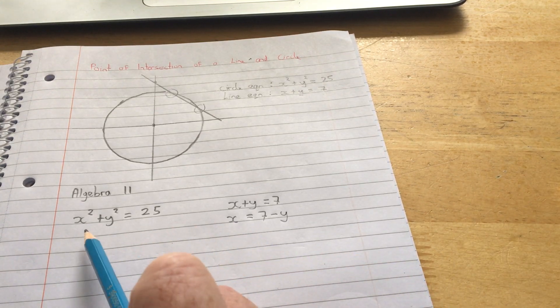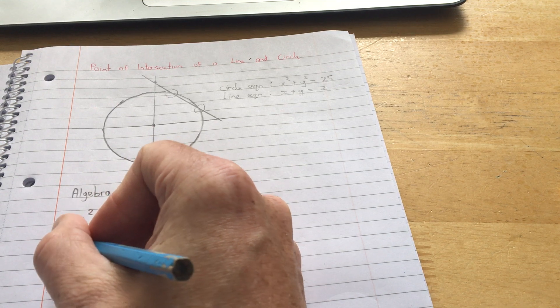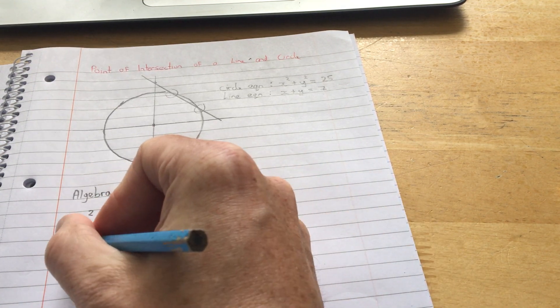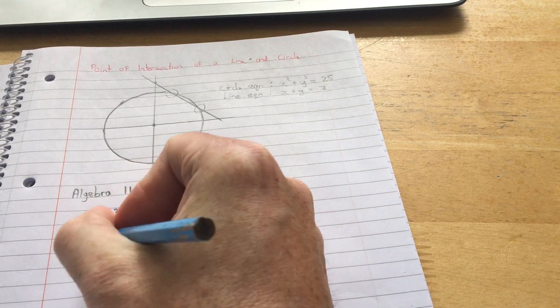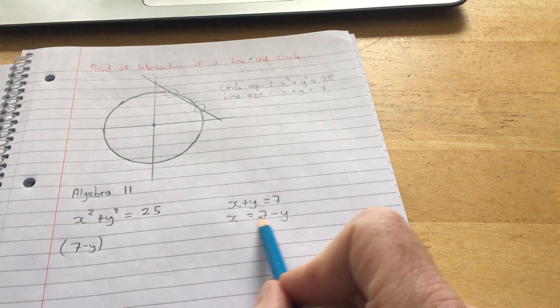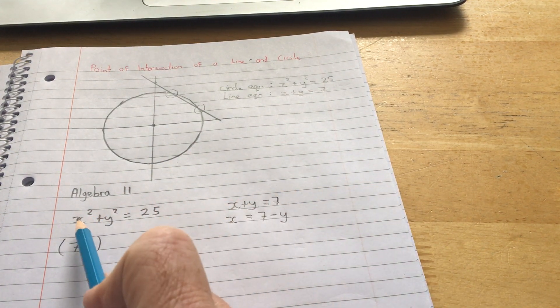What I can do now is, in this equation here, I can replace x with 7 minus y. It's like a substitution. It's like saying x equals 3. Then you would replace x with 3.